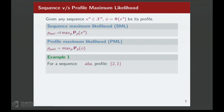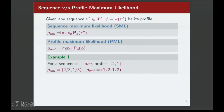Let's take the example where we had sequence A, B, A and profile 2, 1. The sequence maximum likelihood is 2/3, 1/3 — the empirical distribution. What's the profile maximum likelihood? It turns out it's actually the uniform distribution over 2 elements. Note: I'm not telling you the universe has 2 elements — if you optimize over all possible distributions, the one maximizing the profile likelihood is uniform over 2 elements.